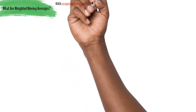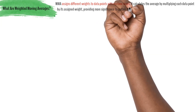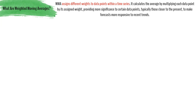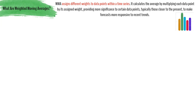What are weighted moving averages and what makes this forecasting method different from simple moving averages? Weighted moving averages are a forecasting technique that assigns different weights to various data points within a time series. Unlike simple moving averages, where all data points are treated equally, weighted moving averages give more significance to certain data points by assigning them higher weights. These weights are often based on the belief that recent data is more relevant in predicting future values, making it a more responsive and adaptable forecasting model.